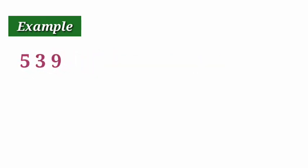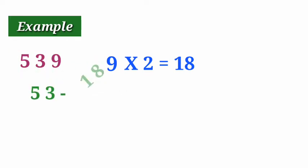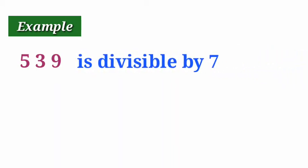Let us look at another number: 539. Take the last digit 9 and multiply by 2: 9 times 2 is 18. Subtract from the rest of the number, which is 53: 53 minus 18 equals 35. Since 35 is a multiple of 7, the given number 539 is divisible by 7.